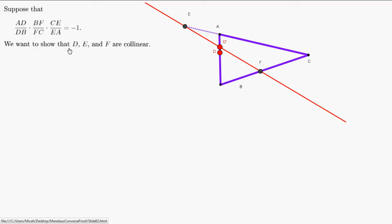To prove the converse of Menelaus' Theorem, suppose we have three points D, E, and F such that the product of their ratios of division equals minus one. We want to show that these three points D, E, and F are necessarily collinear.